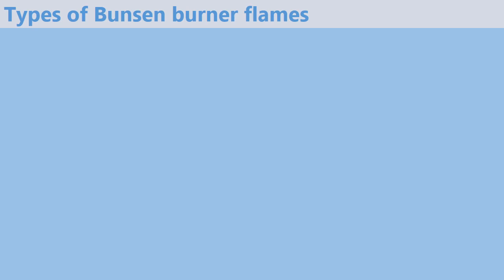Types of Bunsen burner flames. Before we talk about the types, what is a flame? In simple terms, a flame is just a mass of burning gases. Now when you light up a Bunsen burner in the laboratory, you are going to get a possibility of two flames.